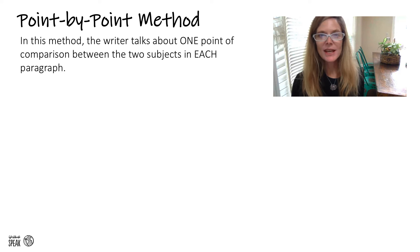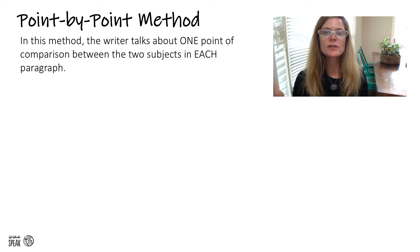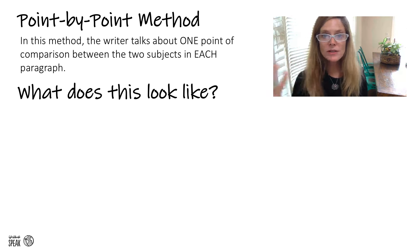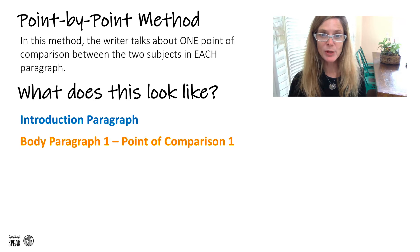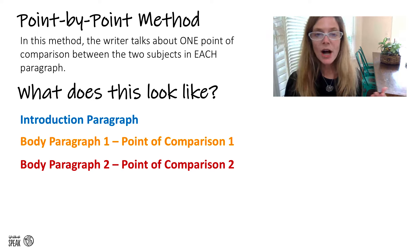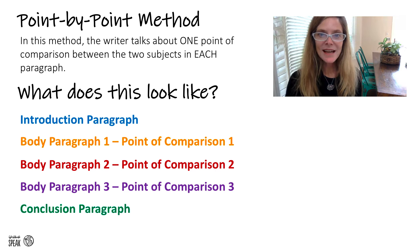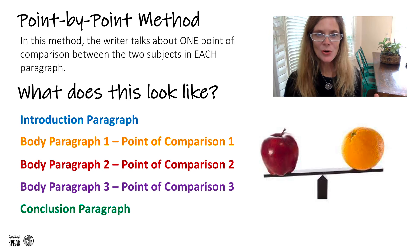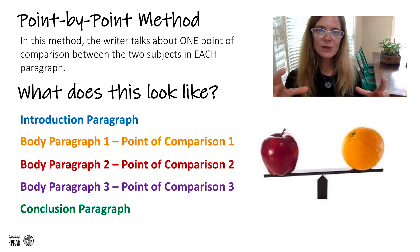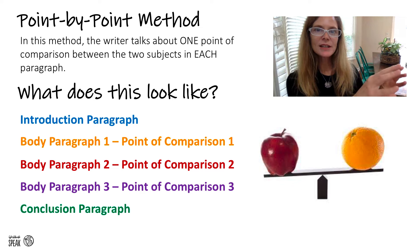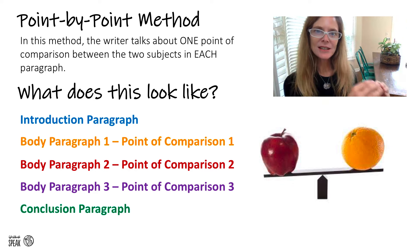In the point-by-point method, the writer talks about one point of comparison between the two subjects in each paragraph. The structure looks like this: there's an introduction paragraph, then a body paragraph with point of comparison one, another body paragraph with a second point of comparison, possibly another body paragraph with a third point of comparison, and lastly a conclusion paragraph. In our example today we're comparing oranges and apples, so we'll find three points of comparison and focus on each one per body paragraph, mentioning both the orange and the apple in each.